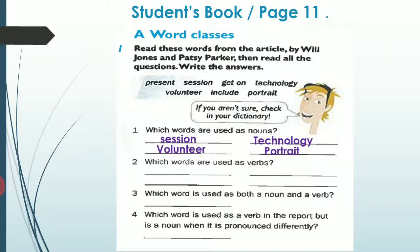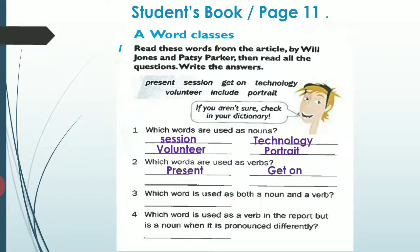Number two: Which words are used as verbs? أفعال. We have present بمعنى يعرض. We have get on بمعنى ينسجم. And volunteer بمعنى يتطوع. And include.